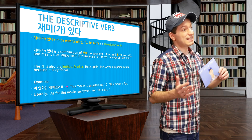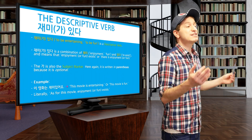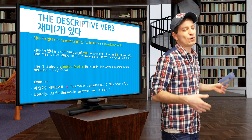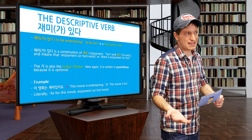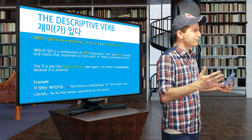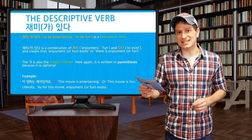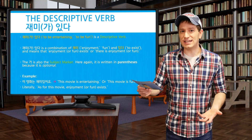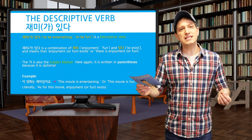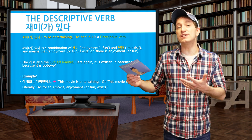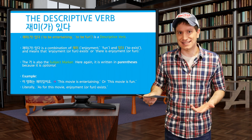Next, we have the descriptive verb 재미가 있다, meaning to be entertaining or to be fun. This comes from 재미, meaning enjoyment or fun, and 있다, to exist — it literally means enjoyment or fun exists. The 가 here is also the subject marker; it's written in parentheses because it is optional. For example, 이 영화는 재미있어요 — this movie is entertaining, or this movie is fun. Literally, as for this movie, enjoyment or fun exists.